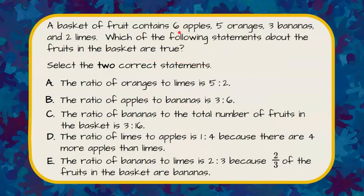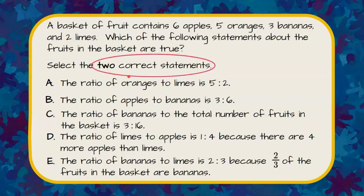A basket of fruit contains six apples, five oranges, three bananas, and two limes. Which of the following statements about the fruit in the basket is true? Select the two correct statements. To begin, I need to identify two of these five choices, so I'll go back to the problem: six apples, five oranges, three bananas, and two limes.